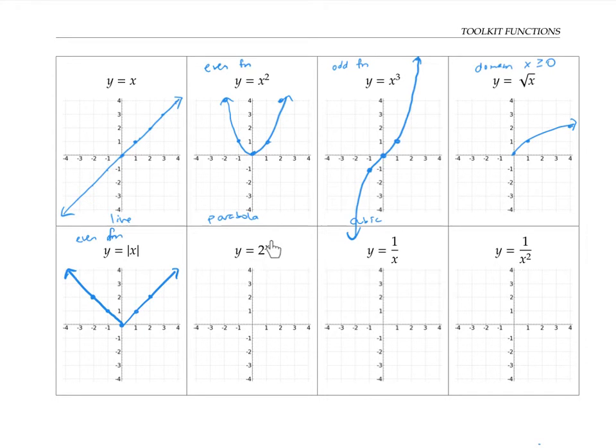Y equals two to the x is what's known as an exponential function. That's because the variable x is in the exponent. If I plot a few points, two to the zero is one, two to the one is two, two squared is four, two to the minus one is one half. I'll plot these on my graph. Let me fill in a few more points.